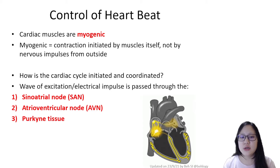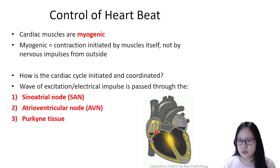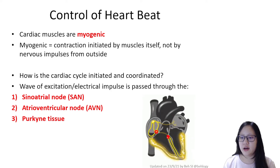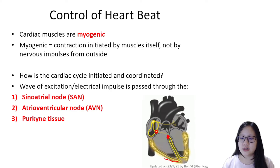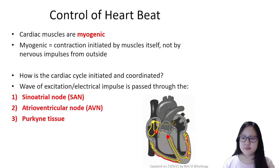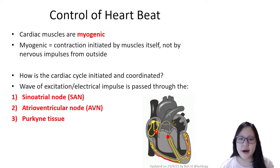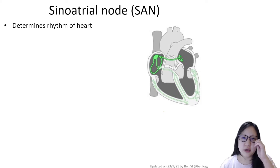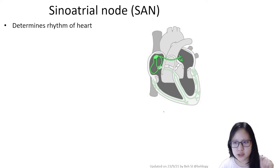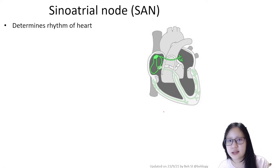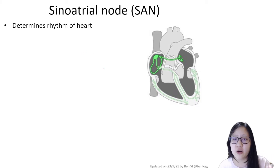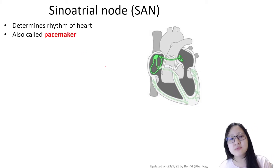The sinoatrial node is located in the atria — it's right here. The atrioventricular node is right in the middle of the heart, between the atria and the ventricle. And then there's the Purkinje tissue here and here. The sinoatrial node is where the nervous impulses are initiated and where the rhythm of the heart is determined. Therefore, it's called the pacemaker because it determines the pace of your heartbeat. It's found in the wall of the right atrium.